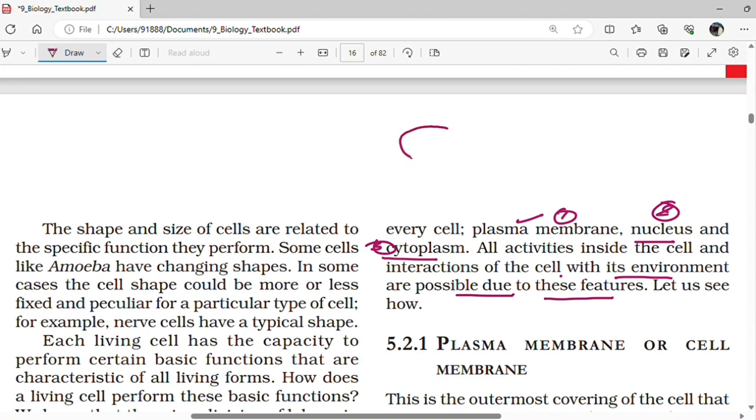Each and every cell is covered with a cell membrane. The other name for cell membrane is plasma membrane. Each and every cell contains nucleus. Nucleus is the control center of the cell because the cell organelles present inside the cytoplasm are controlled by the nucleus. Cytoplasm is a jelly-like fluid which is present below the cell membrane and outside the nucleus.